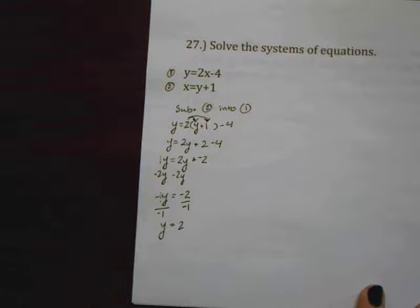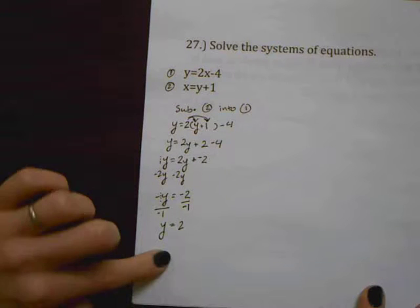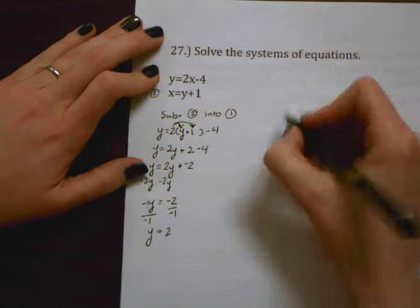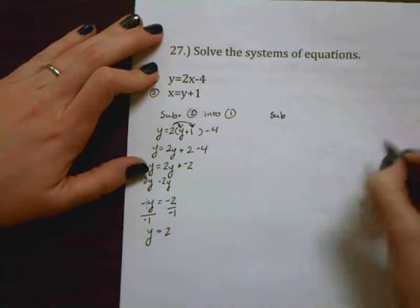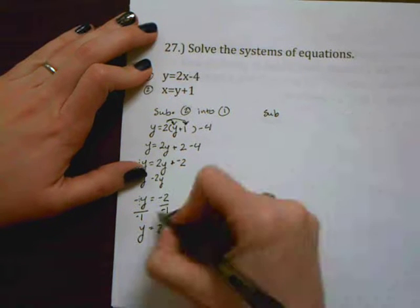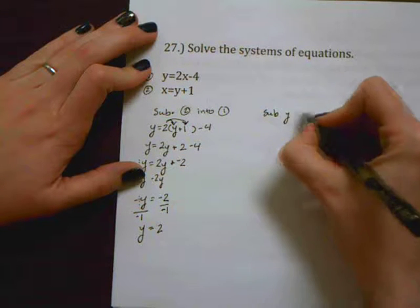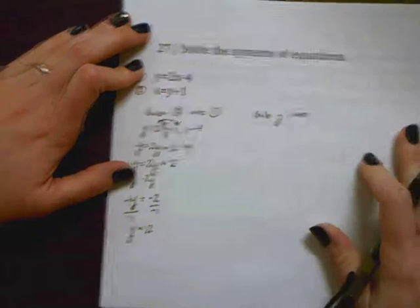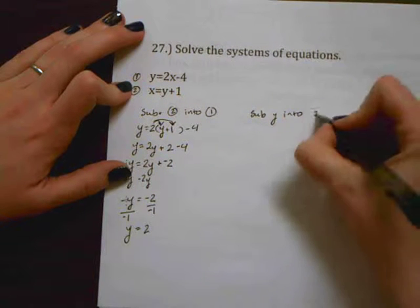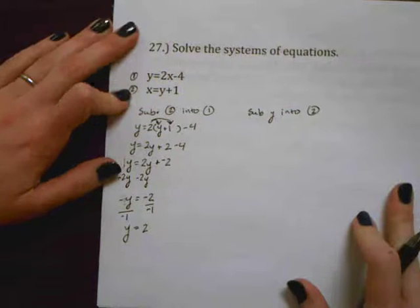I now have one of my unknowns to figure out the other. I'm going to go back into one of my original equations, doesn't matter which one, and I'm going to substitute my y value that I just got into one of my other equations. So let's say we're going to substitute it into equation 2.